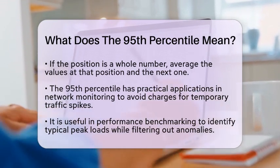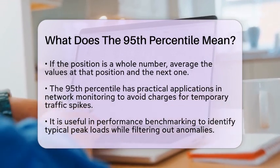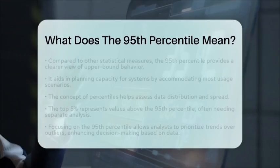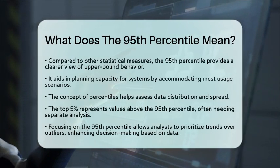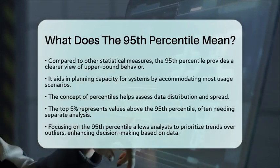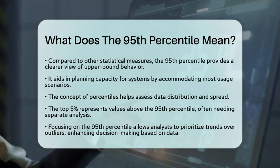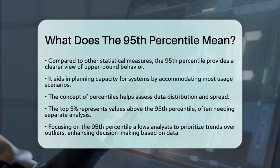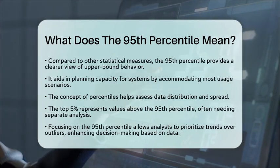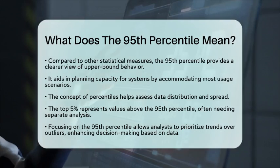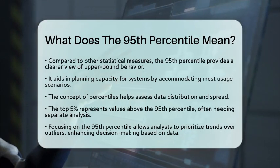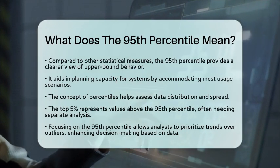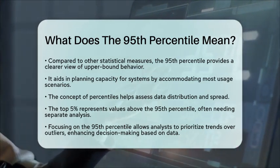Understanding the 95th percentile is important for effective measurement — it provides a balanced view of upper-bound behavior without overemphasizing rare spikes. This is especially useful in capacity planning, where systems need to accommodate most usage scenarios. For example, a cloud service might use this metric to allocate bandwidth efficiently, ensuring reliability for 95% of user demand. Additionally, the difference between two percentiles can give you a sense of how data is distributed.